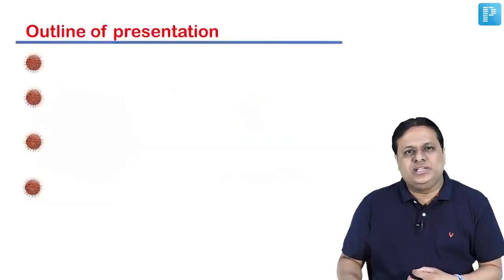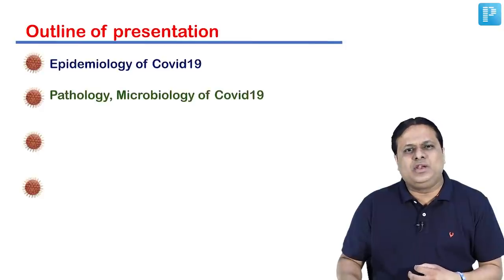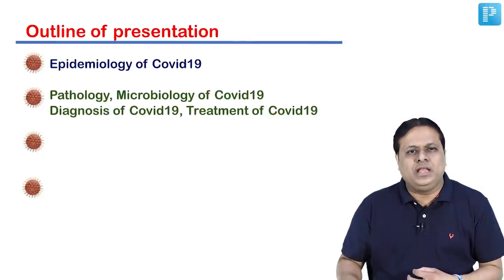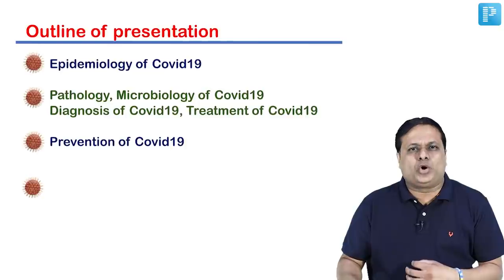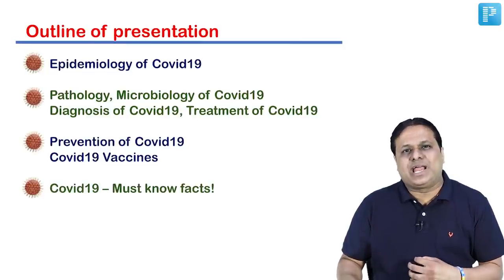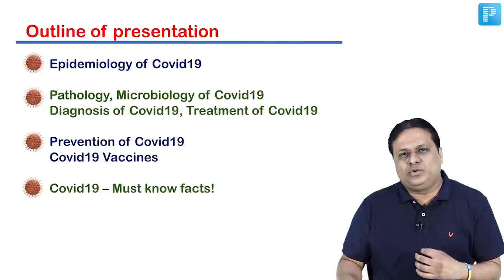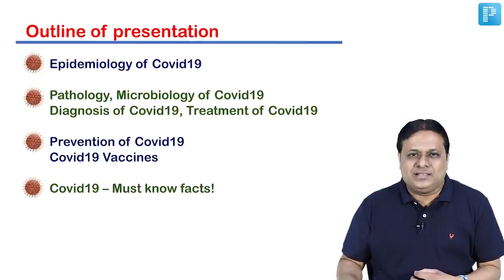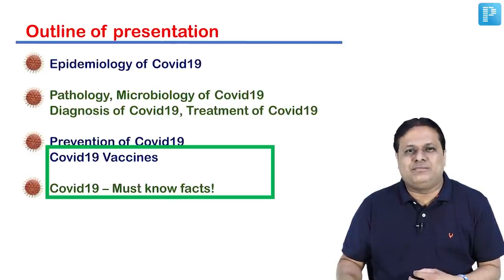How I am going to cover this session today — sharing with you a brief outline. First, we will discuss the epidemiology of COVID-19 disease. Then we will look at pathology and microbiology of COVID-19 along with diagnosis and treatment. We will also look at prevention of COVID-19 along with COVID-19 vaccines. And finally, we will wrap up with some must-know, interesting facts about COVID-19 disease. I will highlight the most important take-home points through a green colored box throughout the presentation.